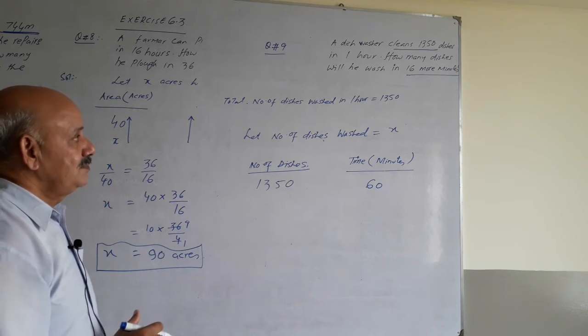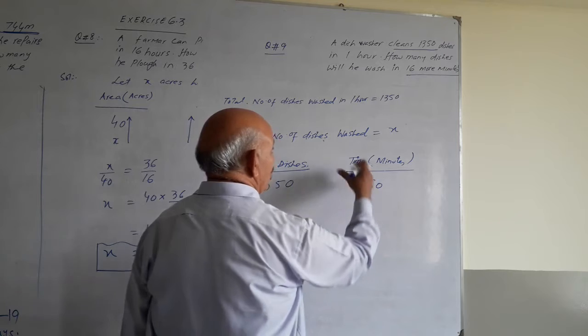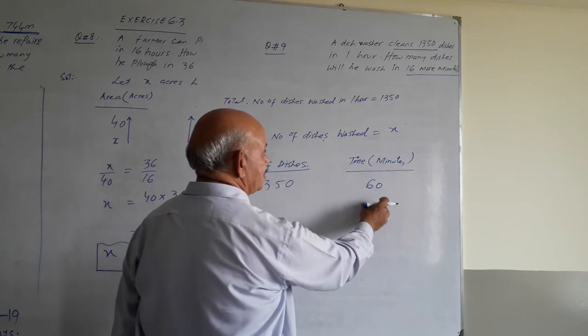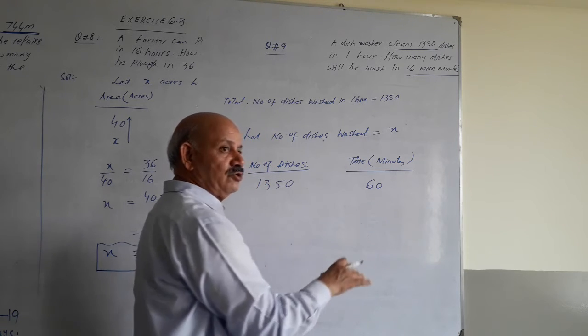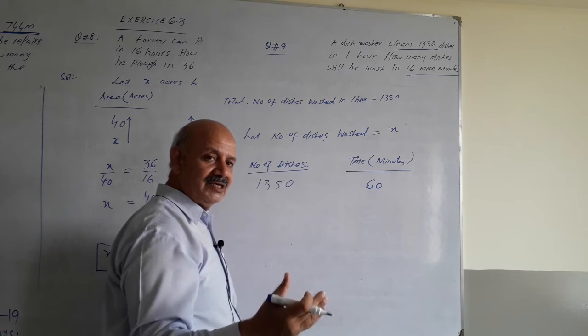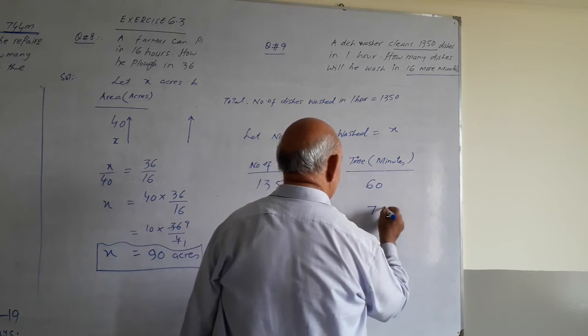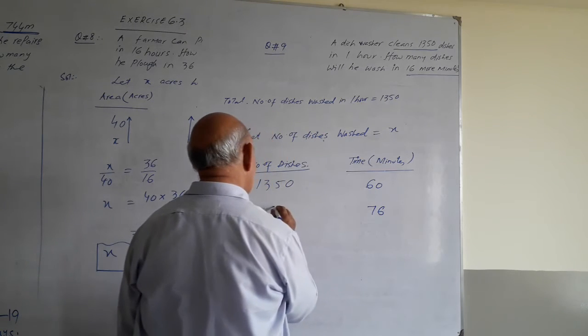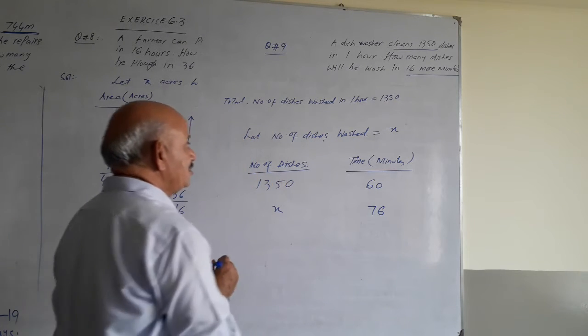We say that other time 16 minutes is more than 1 hour. 1 hour plus 16 minutes is 76 minutes. In 76 minutes we have to tell how many dishes washed.